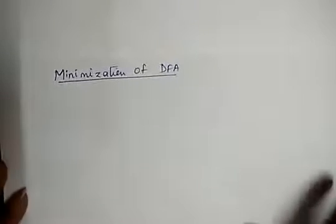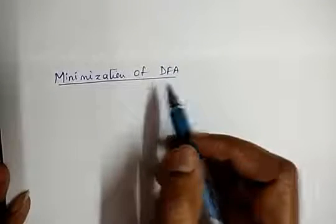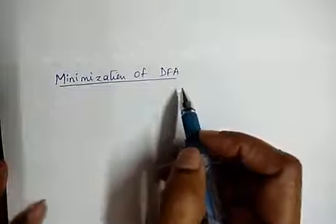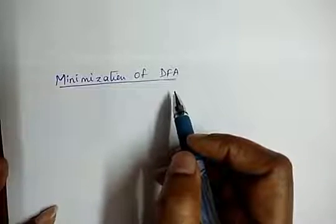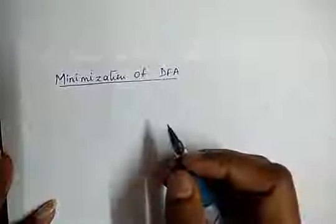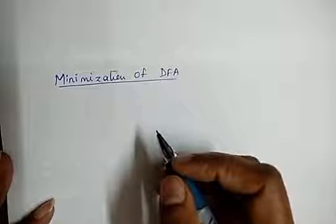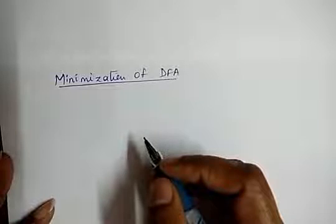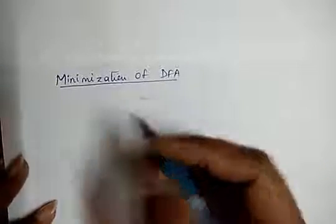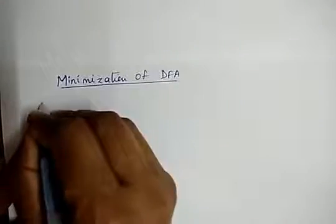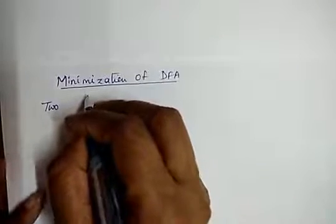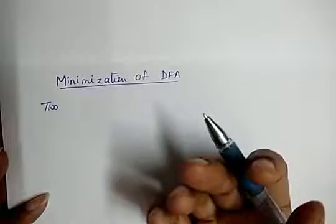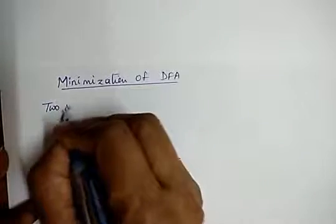Our next topic is minimization of DFA, or optimization of DFA. As we know, we can optimize two states to a single state — we can reduce two states into a single state when the two states are equivalent to each other. So for minimization of DFA, first we have to understand when two states are said to be equivalent.